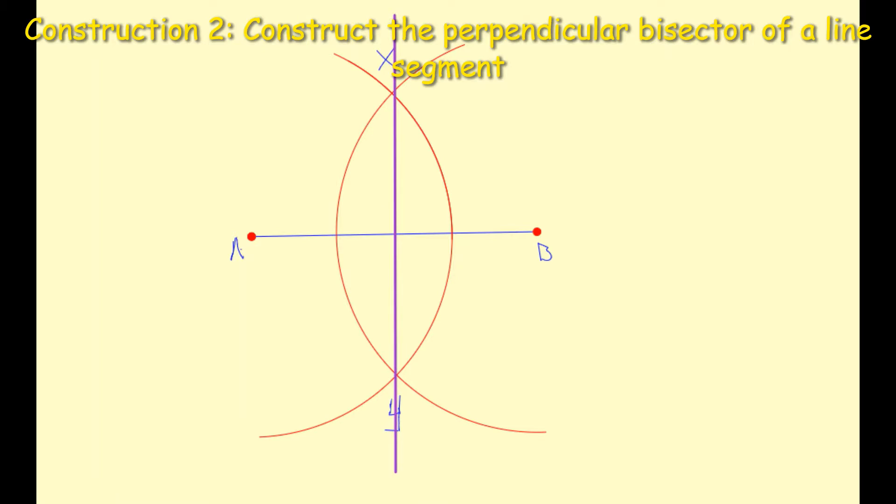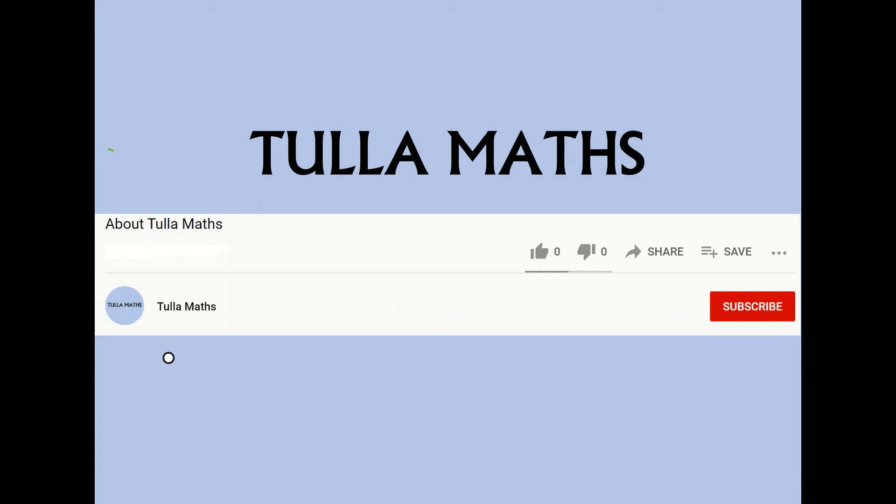When I move my ruler, you can see now that that purple line is bisecting the original line segment AB in half. Basically, I now have two equal lengths on either side of that purple line, and that's Construction 2. Thank you for watching another tutorial video from TullaMaths. Make sure and subscribe.